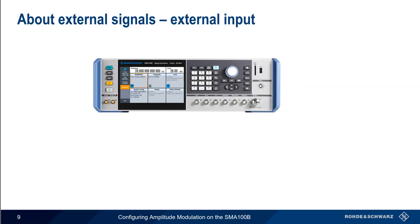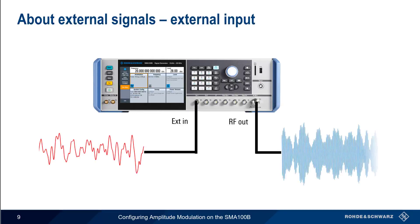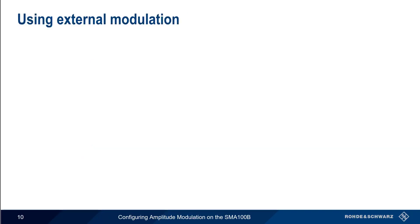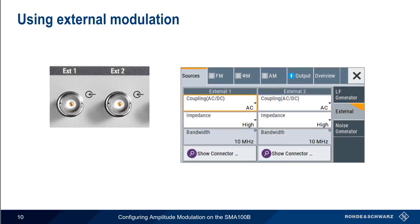In addition to using the internal LF generator, the SMA can also generate signals using an external modulation source to create the modulated RF output. In this case, the input or modulating waveform does not need to be regular or periodic. The SMA100B supports external modulation sources by means of two connectors, External 1 and External 2. Either or both of these BNC connectors can be connected to an external modulation source. For each external connector, we can specify the coupling — AC or DC — as well as the impedance.